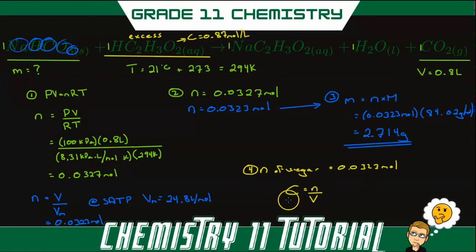So rearranging this equation, we will get volume equal to moles divided by concentration. Let's continue over here. So that's going to give us moles of 0.0323 moles divided by the concentration of 0.87 moles per liter, and we get 0.0371 liters, or 37.1 milliliters of vinegar. So we need more than that. So let's round up to say 40, 45, or even 50 milliliters will be safe.